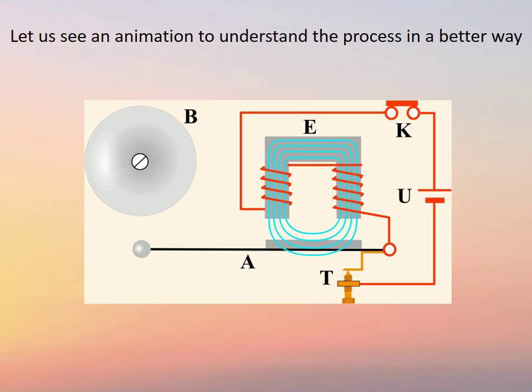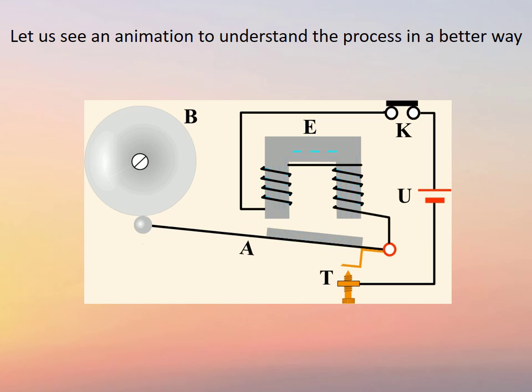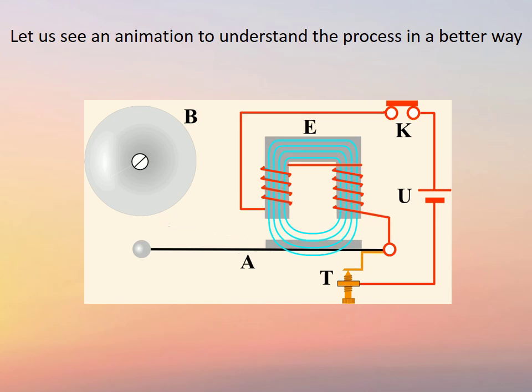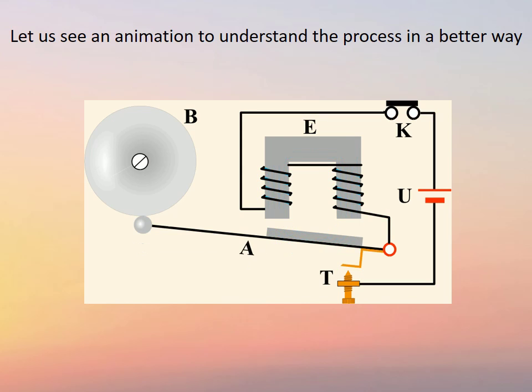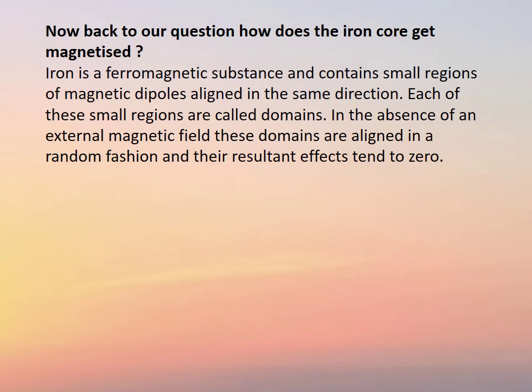The iron core is now magnetized and produces a magnetic field, which is represented by the blue lines. Now observe the electrical contact. When the arm hits the gong, it loses contact with the circuit.